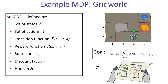Transitions do not have to be deterministic. For this particular grid world, we'll often work with the assumption that if you choose action north, there's an 80% chance you actually move north, a 10% chance you move off to the left, and a 10% chance you move off to the right.